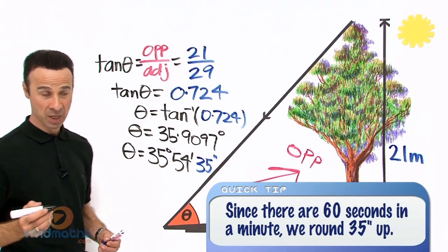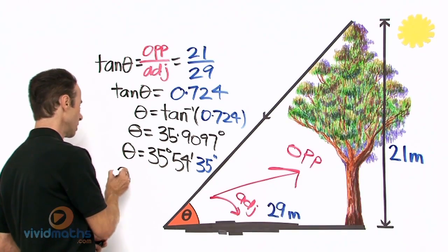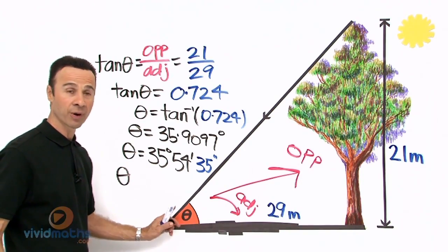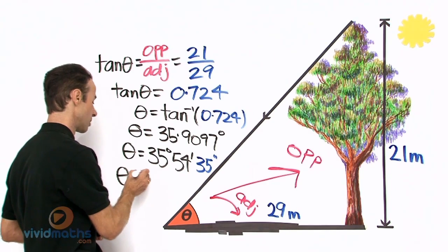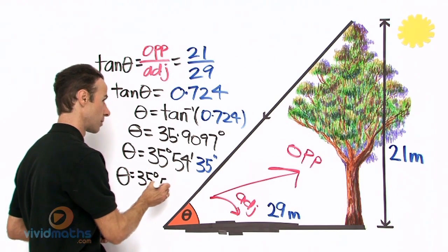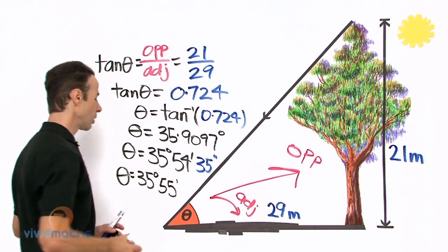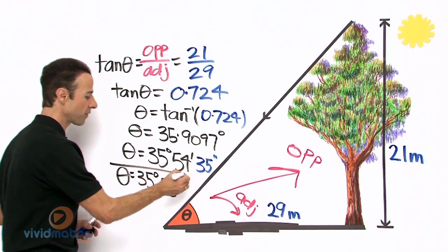So therefore, to the nearest minute, the answer for that angle there on the ground, the sun's rays coming down, the sun's rays coming down is 35 degrees and 55 minutes.